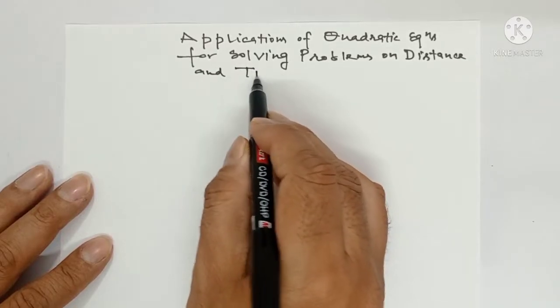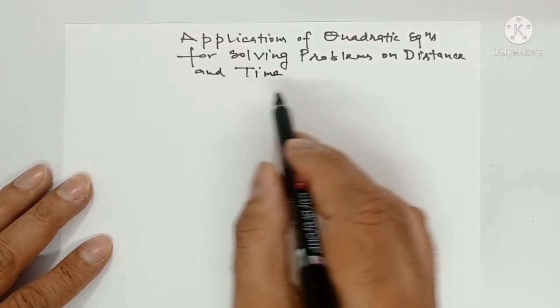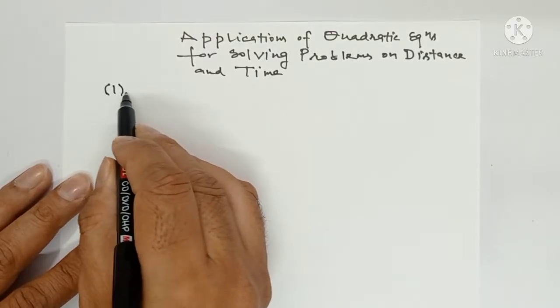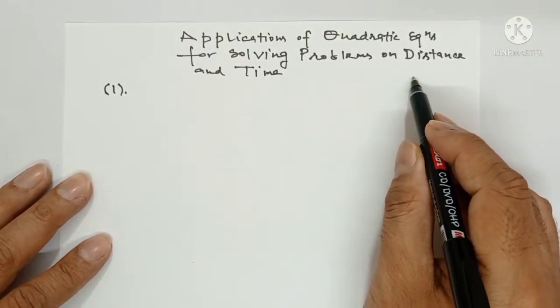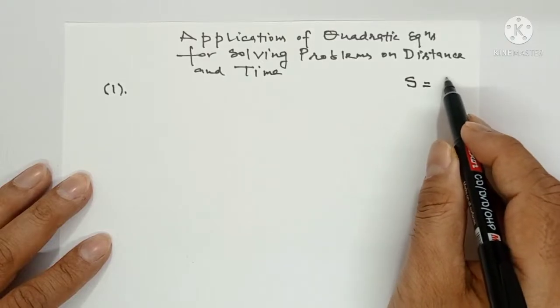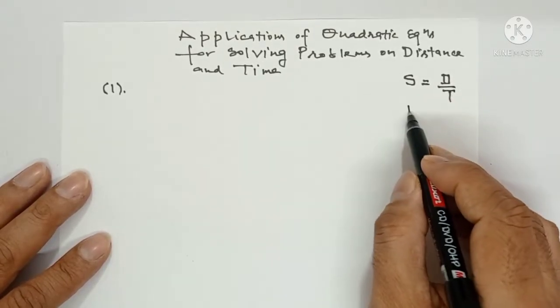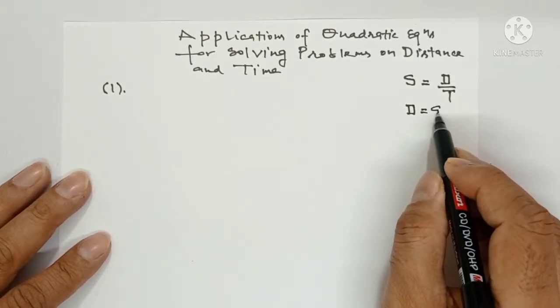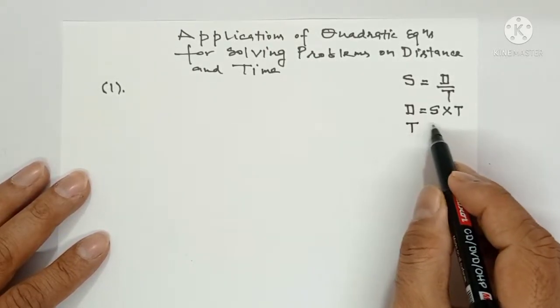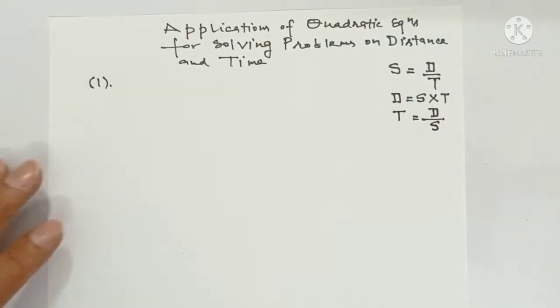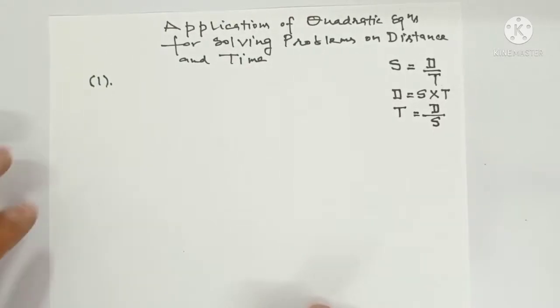So let's start. There is an important question. Before I start the question, you should know about the formulas: speed equals distance upon time, distance equals speed into time, and time equals distance upon speed. So before we do any sort of question, you must be aware with the formulas.